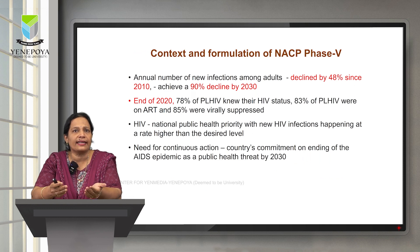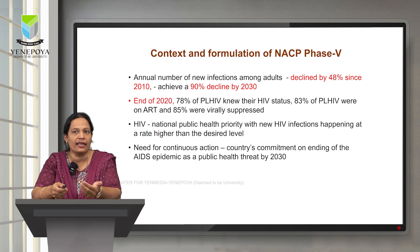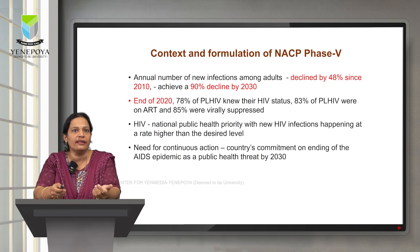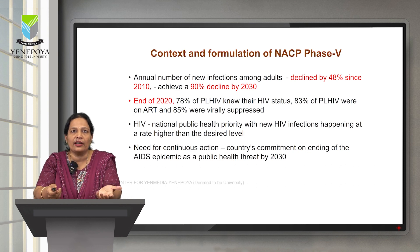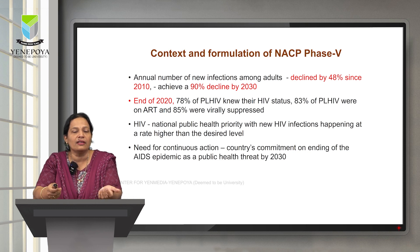What is the context that led to the formulation of NACP Phase 5? NACP has been implemented all over the country, but we still need to achieve many more milestones. The annual number of new HIV infections among adults has declined by 48% since 2010; however, we are yet to achieve a 90% decline by 2030. At the end of 2020, 78% of people living with HIV AIDS knew their HIV status, 83% of PLHIV were on ART, and 85% were virally suppressed. HIV still remains a national public health priority with new HIV infections happening at a rate higher than the desired level, necessitating continuous action and the country's commitment to ending the AIDS epidemic as a public health threat by 2030.